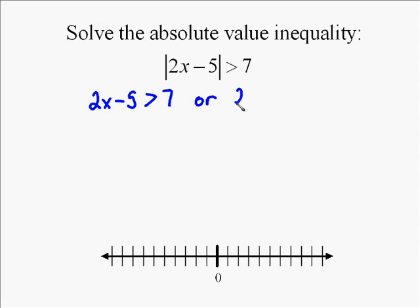The second, you do 2x minus 5. Then you've got to change the direction of the sign, so make it less than, and change the sign of the 7.